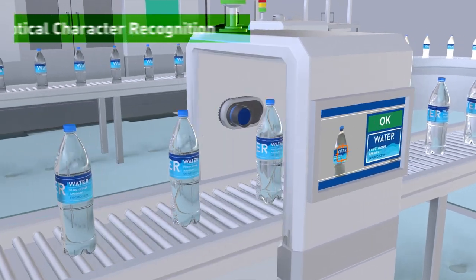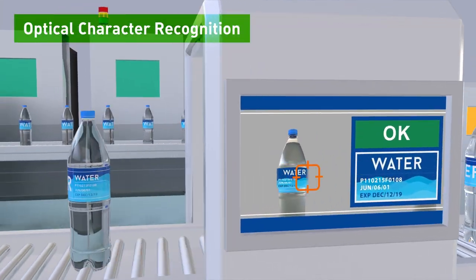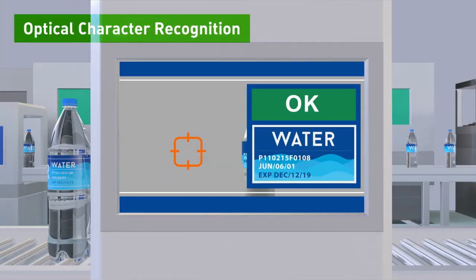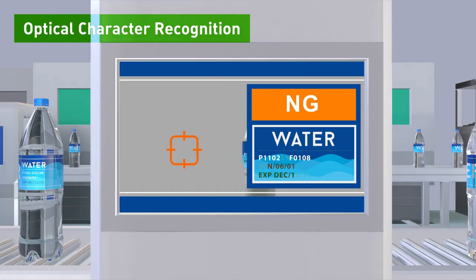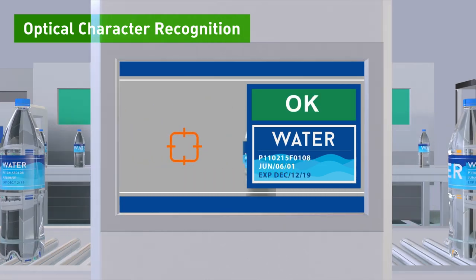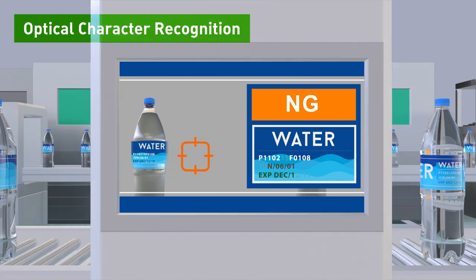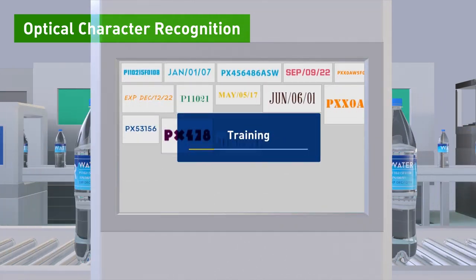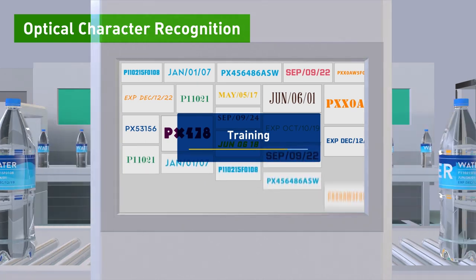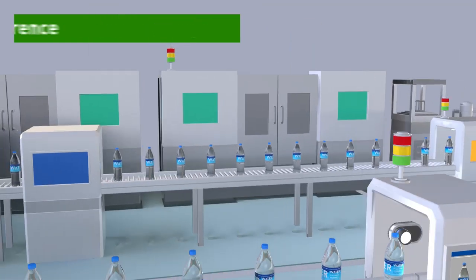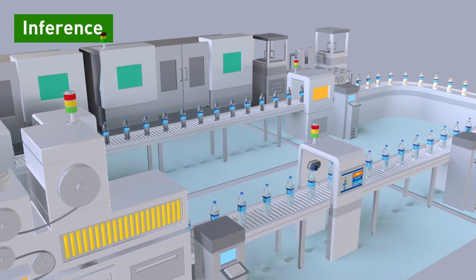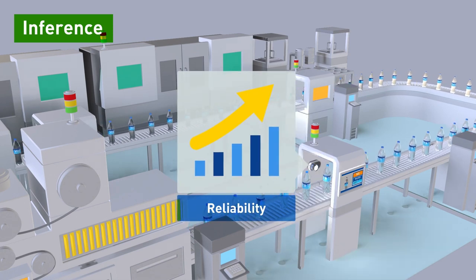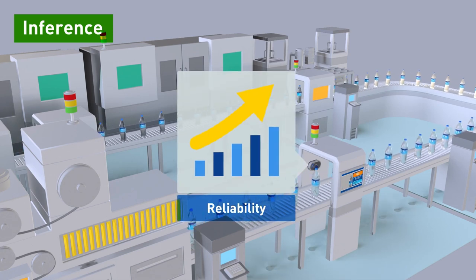Optical character recognition is one of the major machine vision technologies. Some challenges of OCR come up through different fonts, languages, sizes, colors, and distortions in the production line. Deep learning based OCR provides a new approach through image labeling, training, and inferencing processes to reduce complexity and increase reliability on the factory floor. Retraining processes make the OCR system more intelligent and adaptive.